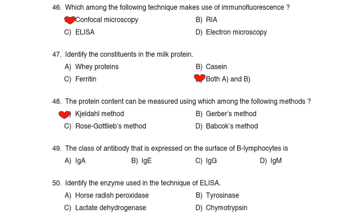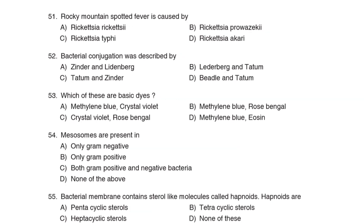49th Question: The class of antibody expressed on the surface of B lymphocytes is Correct Answer: Option D: Immunoglobulin M. 50th Question: Identify the enzyme used in the technique of ELISA. Correct Answer: Option A: Horseradish peroxidase. 51st Question: Rocky Mountain spotted fever is caused by Correct Answer: Option A: Rickettsia rickettsii.